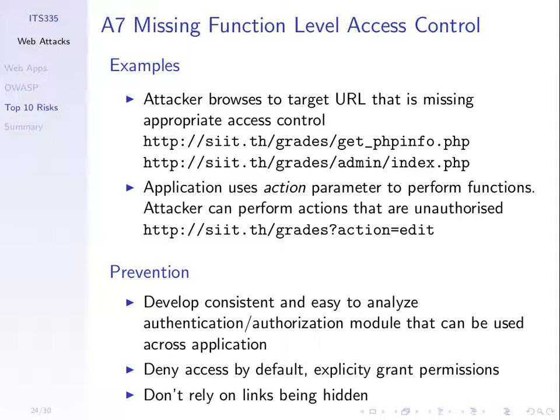Missing function level access control means some websites have access control where different users can perform different functions. For example, logging into Moodle as the instructor or administrator allows different things from what students can do. The access control should make sure students cannot see quiz answers before taking the quiz. If that's not implemented correctly and students can see the answers, that's a security flaw. Make sure the features of the website are implemented such that this is not possible.